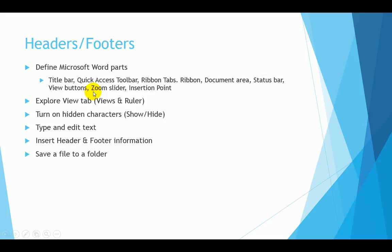We're then going to talk about how to explore the view tab. Specifically we're going to look at about three different views as well as how to turn on and off the ruler. We're also going to show you how to turn on the hidden characters using the show hide button.